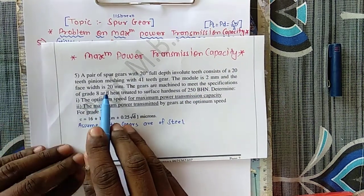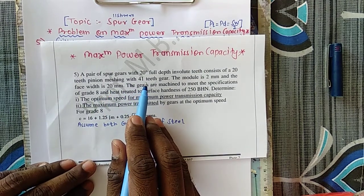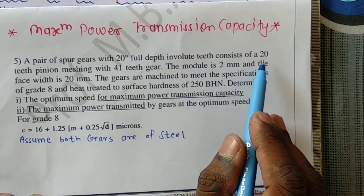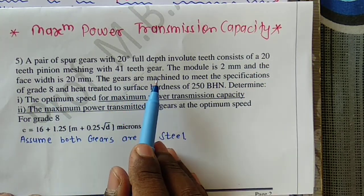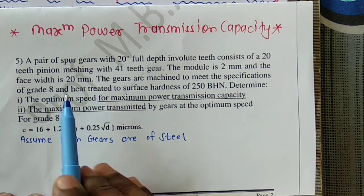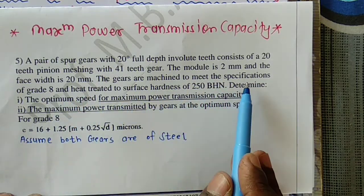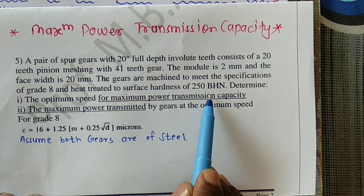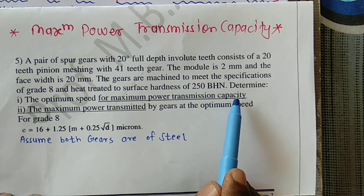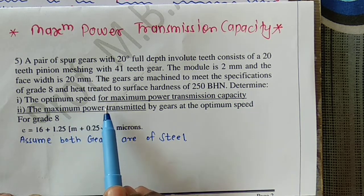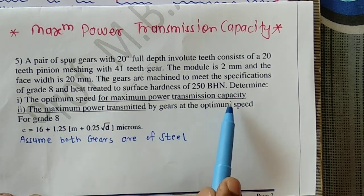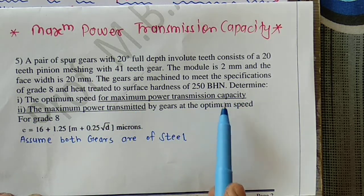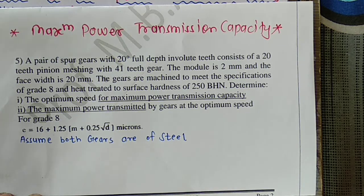I will read the problem. A pair of spur gears with 20-degree full depth involute teeth consists of a 20-tooth pinion meshing with a 41-tooth gear. The module is 2 mm and the face width is 20 mm. The gears are machined to grade 8 specification and heat treated to a surface hardness of 250 BHN. Determine the optimum speed for maximum power transmission capacity.